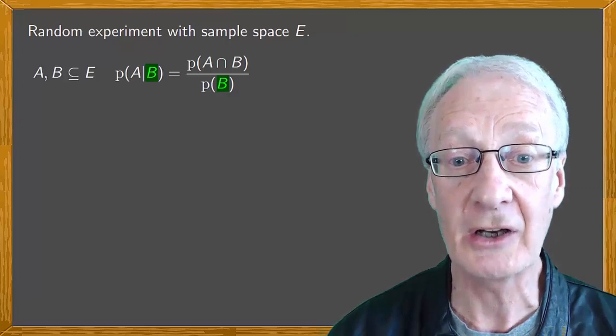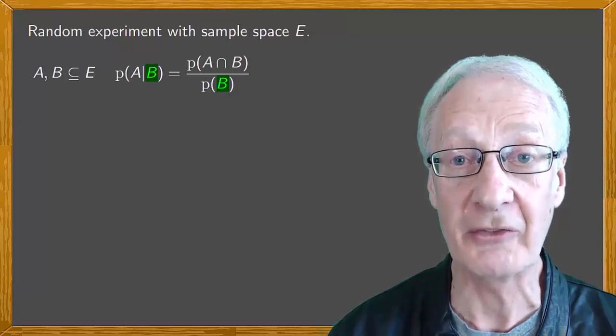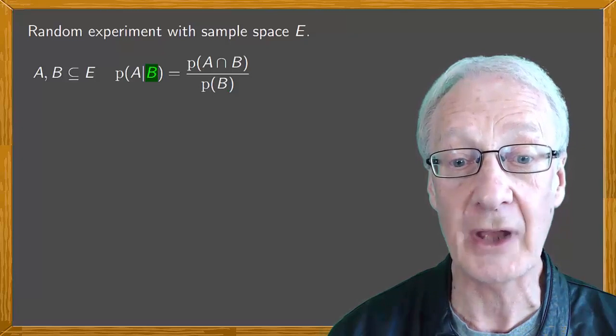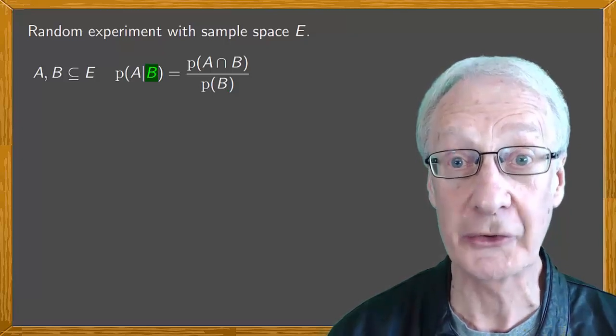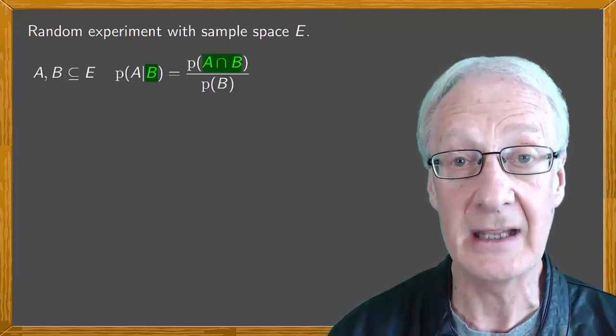We can interpret the expression referring to the previous example as B has occurred. The possible cases are reduced by the results on B. So the favourable cases for A, as B has also occurred, are A intersection B.